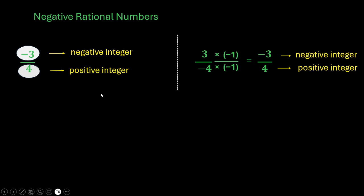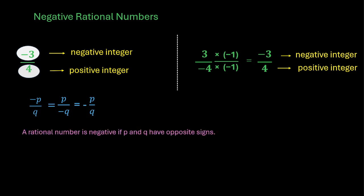We can say that a negative rational number is of the form minus p by q or p by minus q, or we can also write it as minus of p by q. And the formal definition would be a rational number is negative if p and q have opposite signs. But there is a standard way of writing a negative rational number too.